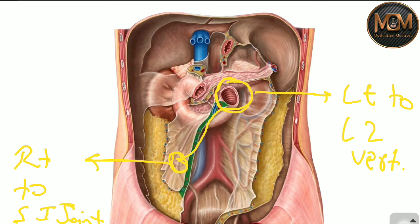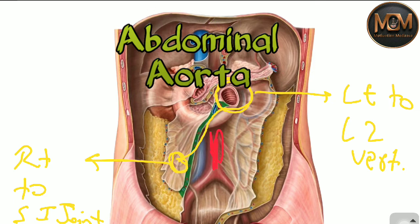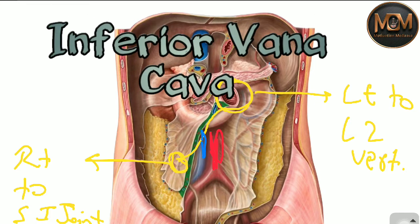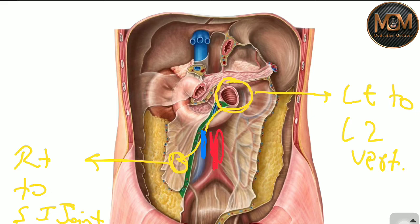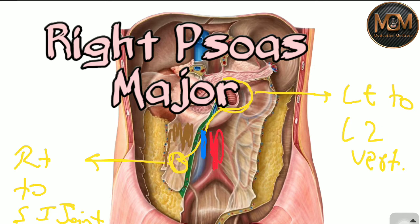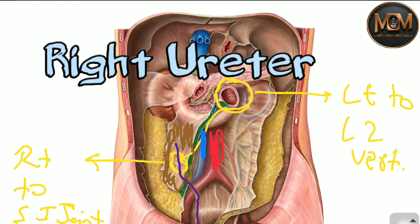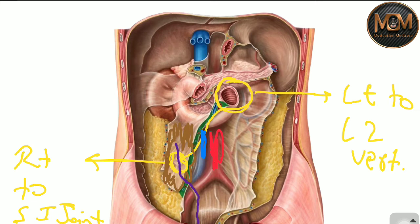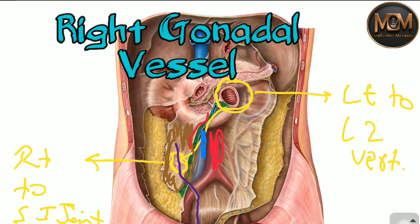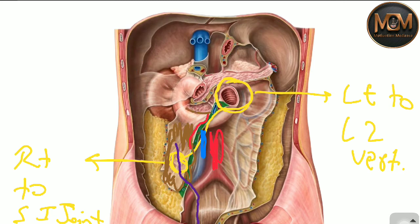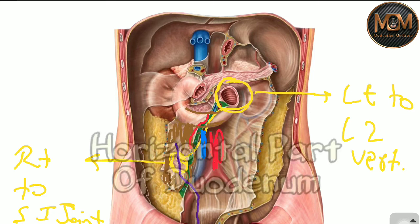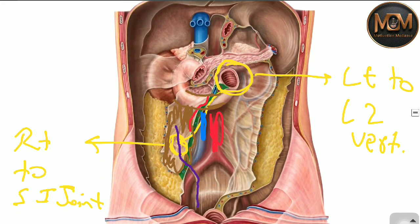Now we have to study the structures crossed by the root of mesentery. The first structure is the abdominal aorta. After that the next structure is the inferior vena cava. Next is the right psoas major muscle, as you can see. This structure going downward is the right ureter. There is also one artery coming out from the abdominal aorta — that is the right gonadal vessels. And also you can see the horizontal part of the duodenum. So these are all the structures.